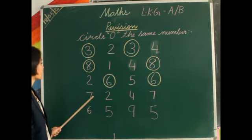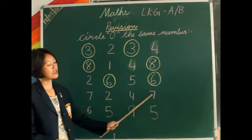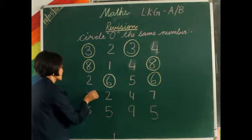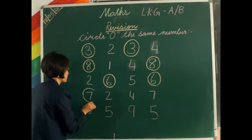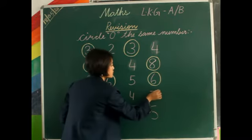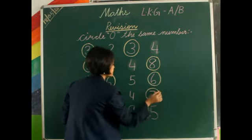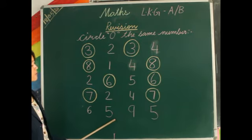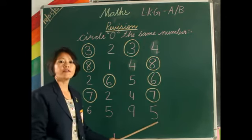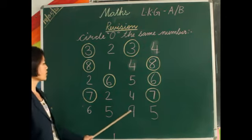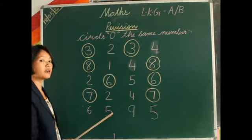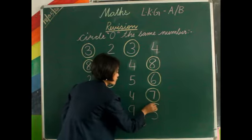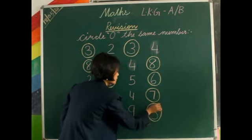Now from here: 7, 2, 4, and 7. From here, which numbers are the same? Yes — 5 and 5 are the same numbers.